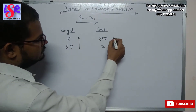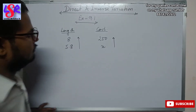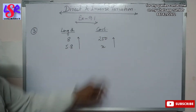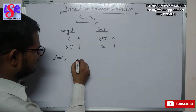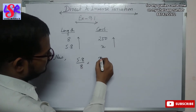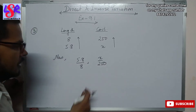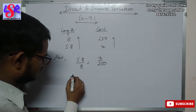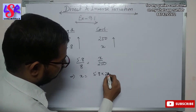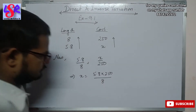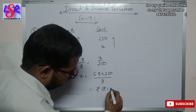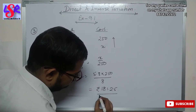We place the arrows in the same direction. This can be written as the fraction: 5.8 upon 8 equals x upon 250. On cross multiplication: x equals 5.8 into 250 upon 8, and on solving we get rupees 181.25 as the answer.